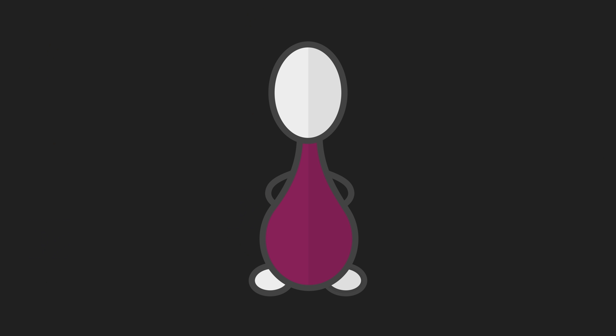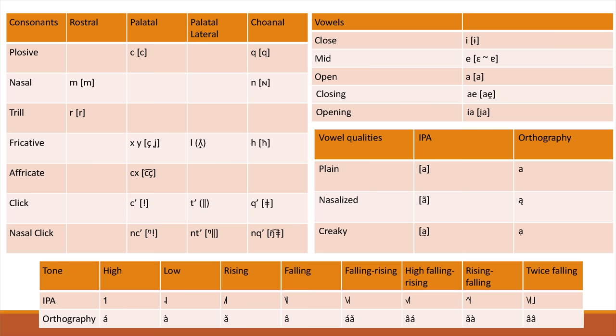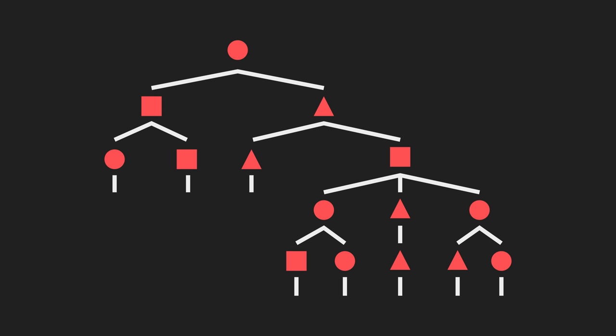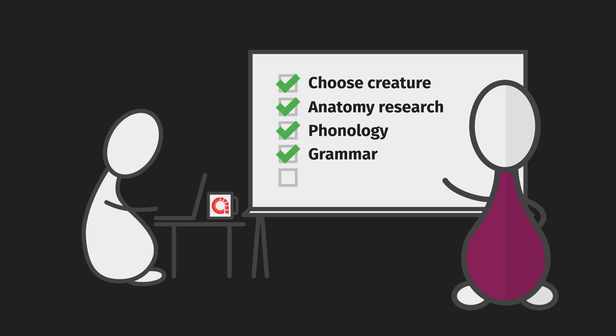So in short, you can kind of do what you want with regards to grammar and syntax. Unlike the creativity of making your own non-human phonology, non-human conlangs can be an opportunity to really play with interesting ideas of information structure. Nobody will criticize your conlang for breaking the universals of human language if it's not a human language.